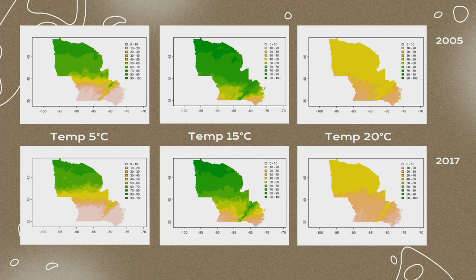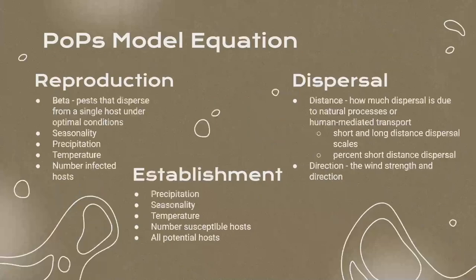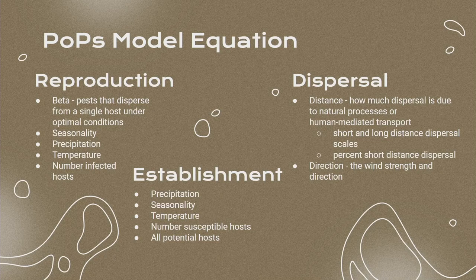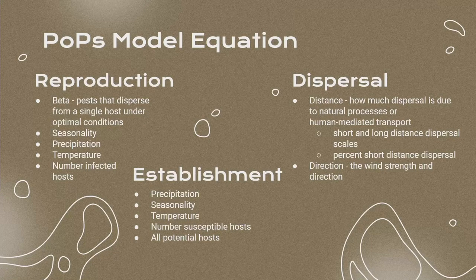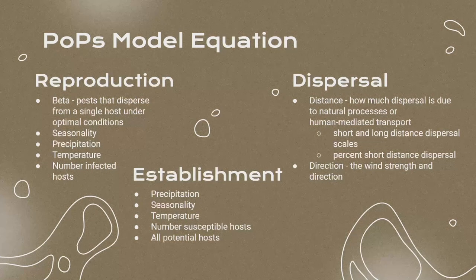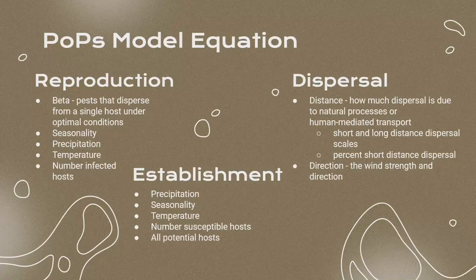Audience member: Did you account for any predation or anything like that in your model? Speaker: I don't believe so, because the model is mostly looking at temperature and precipitation — predation was not really what I was looking at as an influence for this. Audience member: Did they have a lot of predators? Speaker: Not really at all, especially in the United States where they're invasive. I think they have really no predators other than maybe humans stepping on them. I have noticed them more in the last few years.